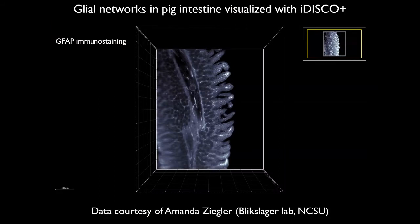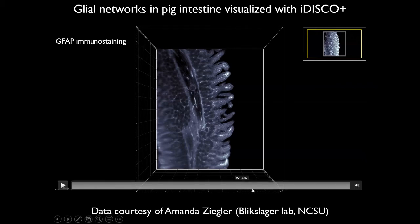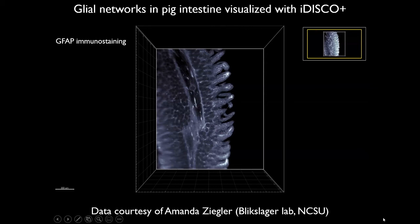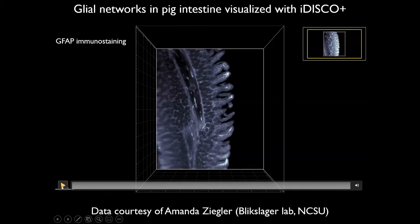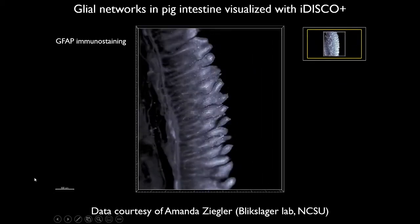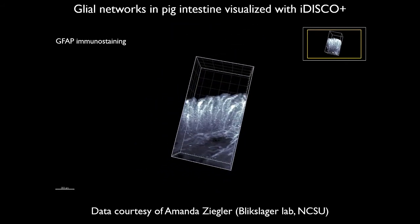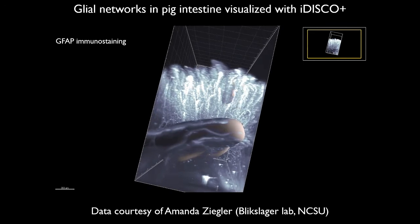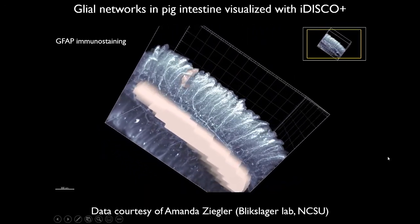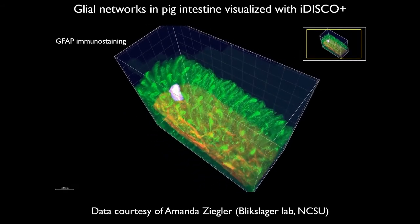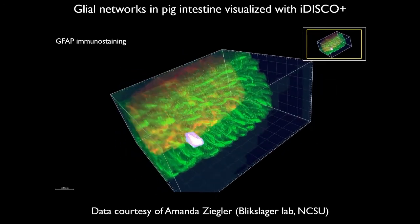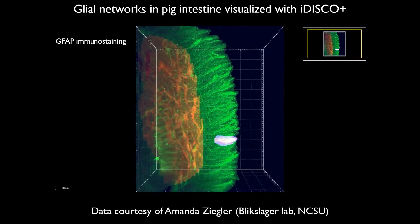Here is an example of data acquired in the Microscopy Services Lab by Amanda Ziegler from the Blixlager lab at NCSU — staining of glia in pig intestine, cleared and immunostained with iDISCO Plus. This is a short video illustrating the imaging done on the light sheet in our core facility. From the imaged planes, we can reconstruct the structure in three dimensions, reslice it in an orthogonal dimension, carve out certain areas of interest like a villi or a plexus, highlight them in different colors, and make measurements in those regions or virtually dissect them.